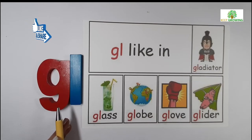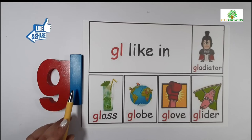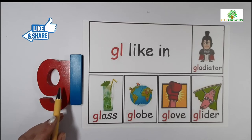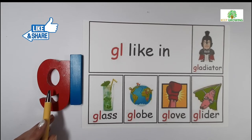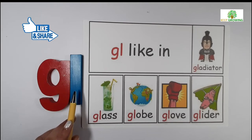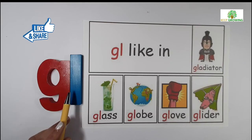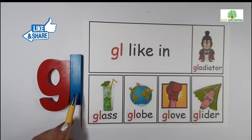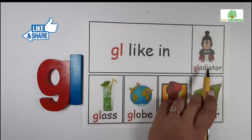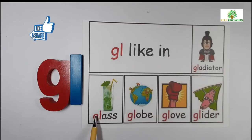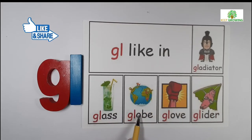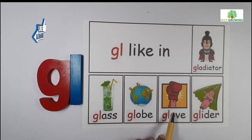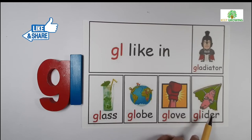Blend of GL. G gives a sound G and L gives a sound L. It gives a sound GL. For example: gladiator, glass, globe, glove, glider.